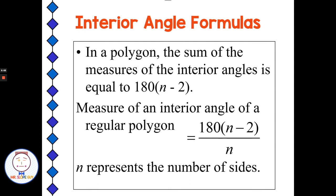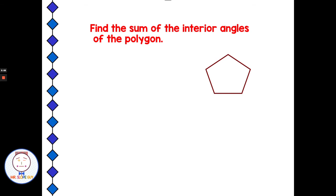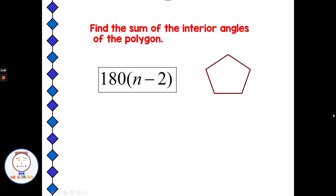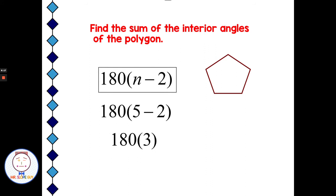Let's look at some examples. Find the sum of the interior angles of the polygon. We count the sides: one, two, three, four, five — so we have a pentagon. Using the formula 180 times (n minus 2), we replace n with 5. Five minus 2 is 3, and 180 times 3 gives us 540 degrees. This works for all pentagons — the interior angles will always add up to 540.